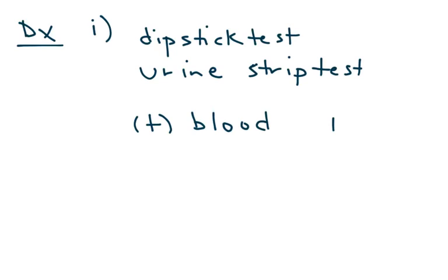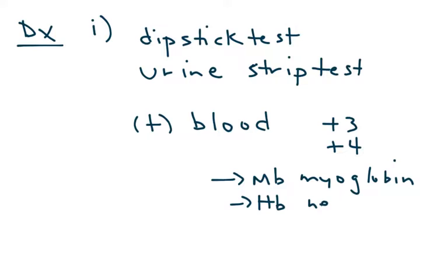And this test essentially shows either positive or negative for blood, and it's usually given as a number like plus three or plus four. Now what's important to remember is that this is referring to either myoglobin or hemoglobin.